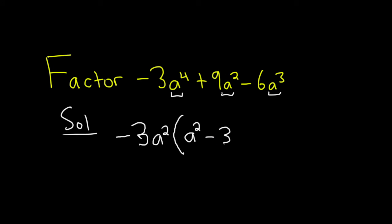And you should check all of this, right? Negative 3a squared times a squared. Well you multiply the a squared and you add the exponents, 2 plus 2 is 4, and so you're good.